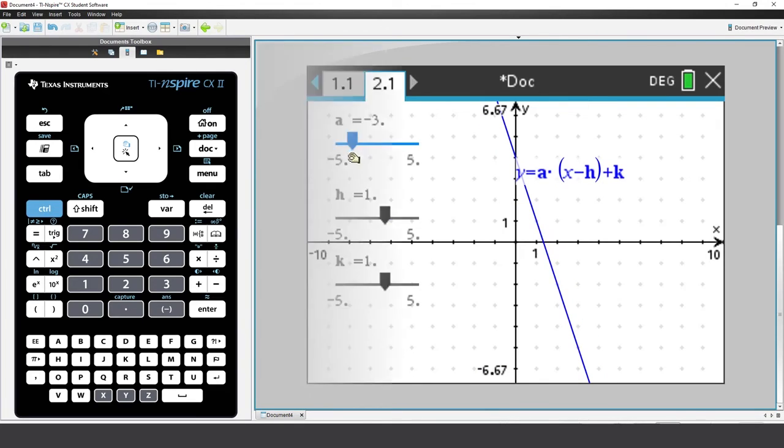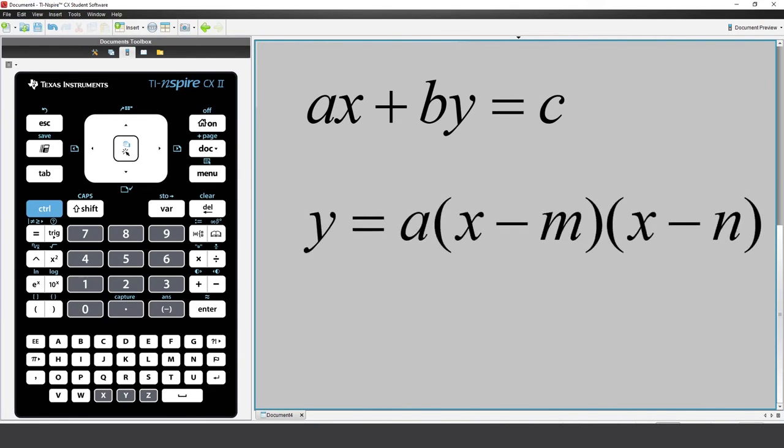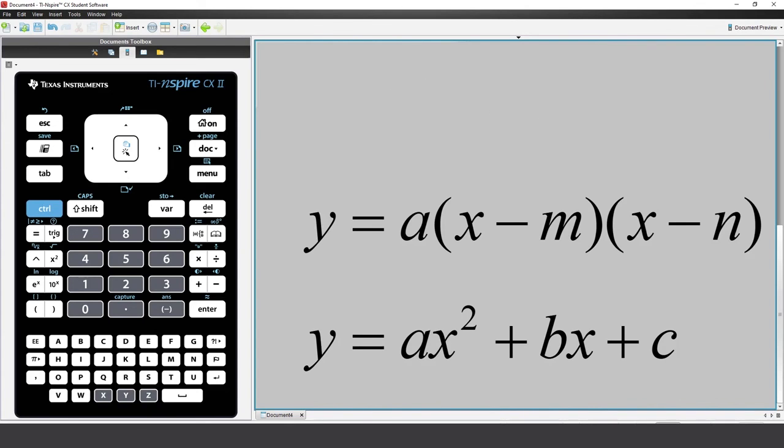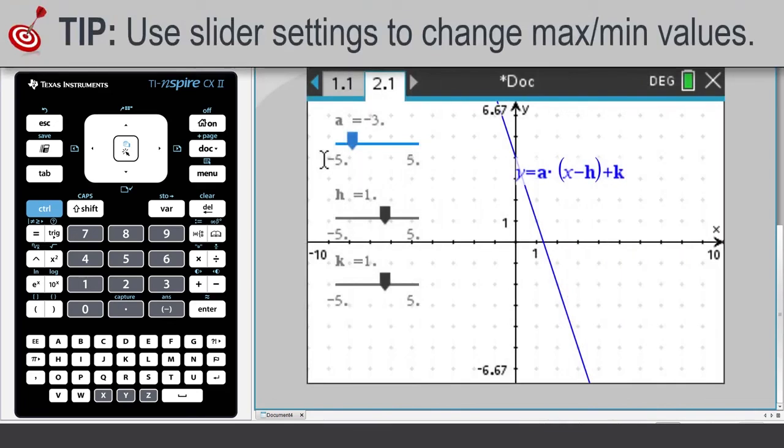Try exploring graphs of a times x plus b times y equals c. Or, y equals a times x minus m by x minus n. And perhaps even standard form, ax squared plus bx plus c. Remember, if you are exploring using just one document, insert a new problem each time, just to avoid clashes between parameters.